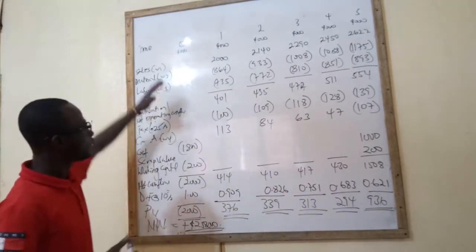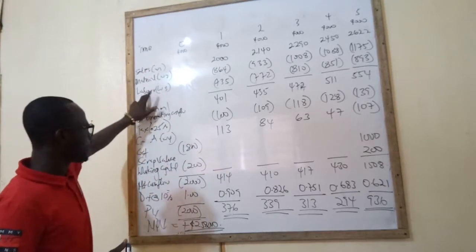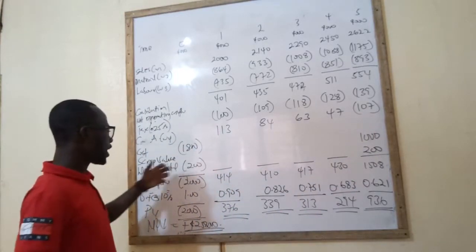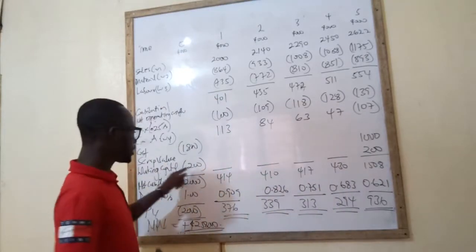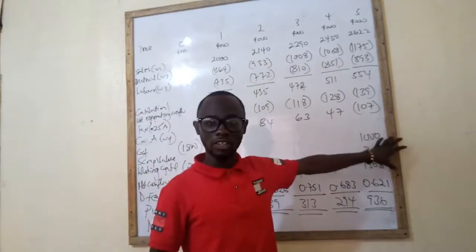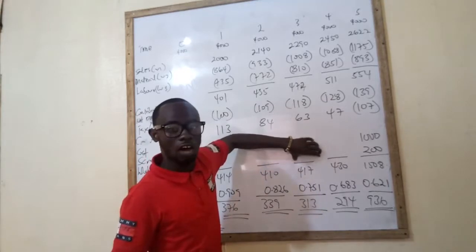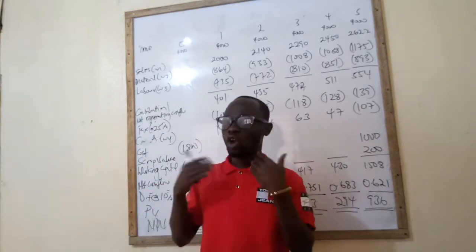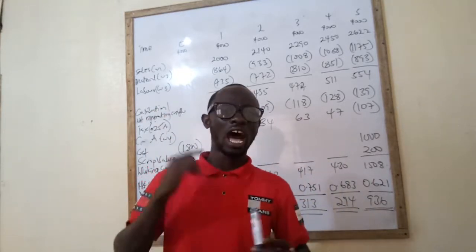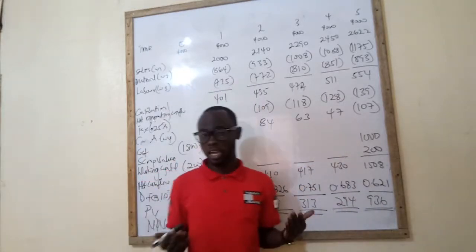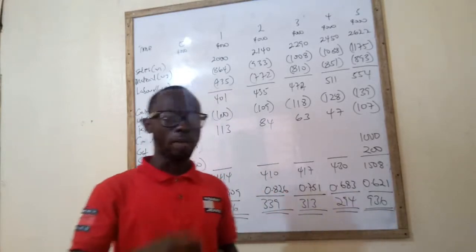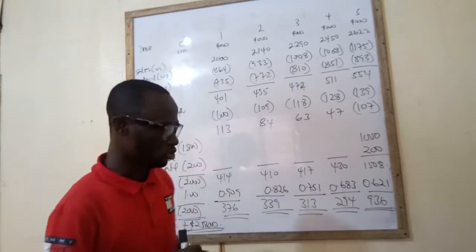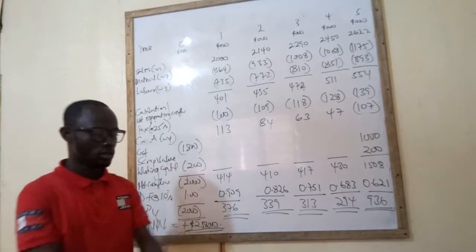Remember the three workings we did first, second, third — then we get our cash flows, charge our tax, bring capital allowance from the fourth workings, bring the cost of the asset, working capital, and the scrap value. Working capital is an outflow at the start but becomes an inflow at the end of the project. Even if working capital occurred in year three as an outflow, it will still come in year five as an inflow — working capital is always assumed to be received at the end of the project, unless the examiner says otherwise.